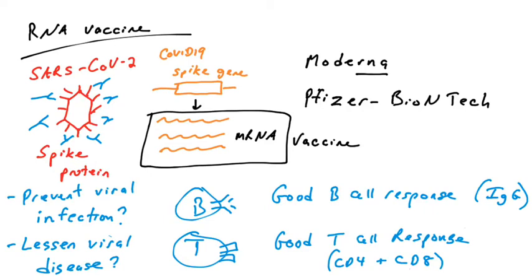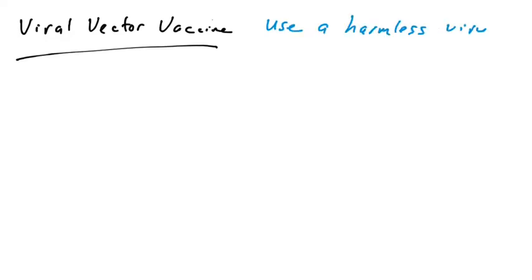There may be one FDA-approved RNA vaccine as of today — it's either zero or one. This is fairly new technology that advanced rapidly in 2020 due to the COVID-19 pandemic. The last vaccine type we're going to discuss is the viral vector vaccine, which is again very similar to DNA and RNA vaccines.